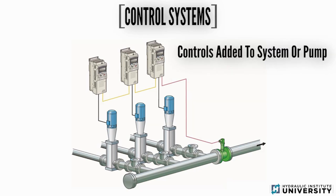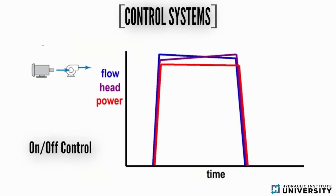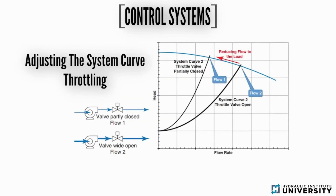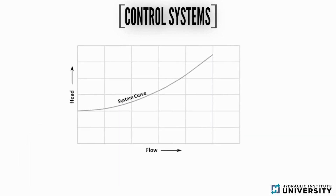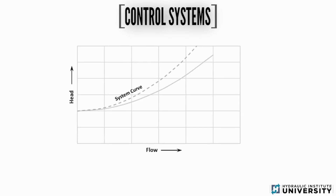Control systems are added to the system or pump. This can be done in three ways: by turning the pump on and off based on demand, by adjusting the system curve, or by adjusting the pump curve. The system curve can be adjusted by throttling a valve, which restricts fluid flow, creating additional friction losses or pressure drop across valves.